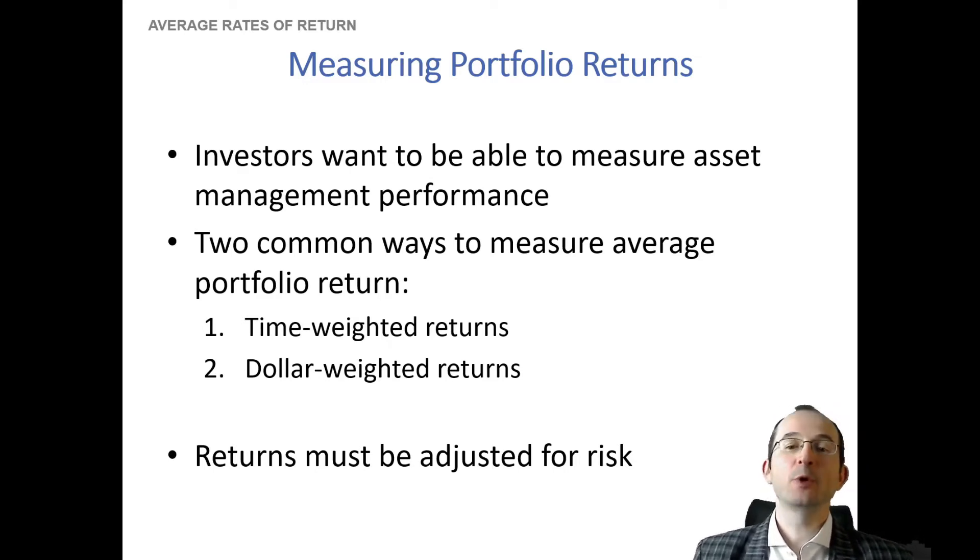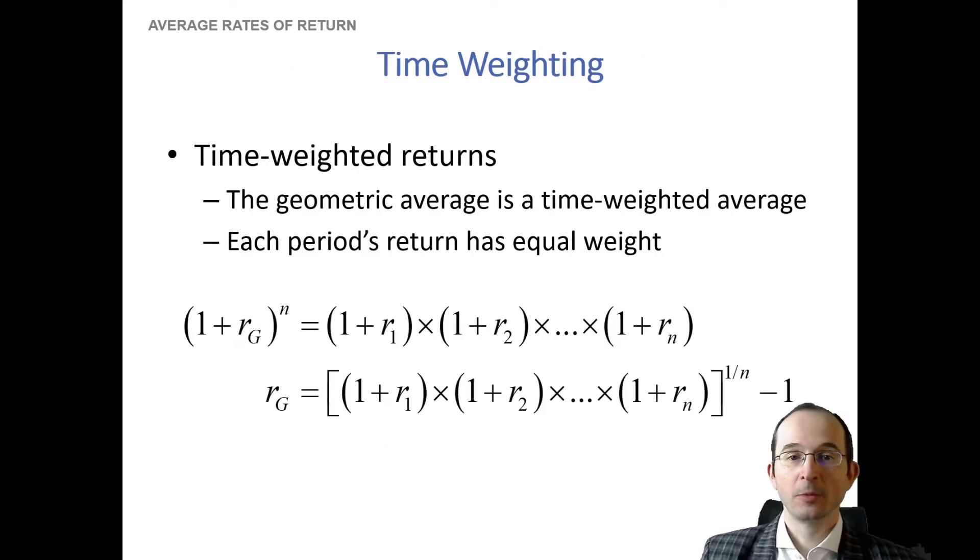There's either time-weighted returns which simply just sort of looks at how you've done over a span of time treating each year or any other period of the portfolio's investment horizon the same as any other. And dollar-weighted returns which look at how well you've done relative to the proportion of capital that you've been managing at any particular time. And then of course once we've created these average measures then we want to adjust them for risk. So this is something that the CFA curriculum spent some time on so this is useful to know both of these alternatives.